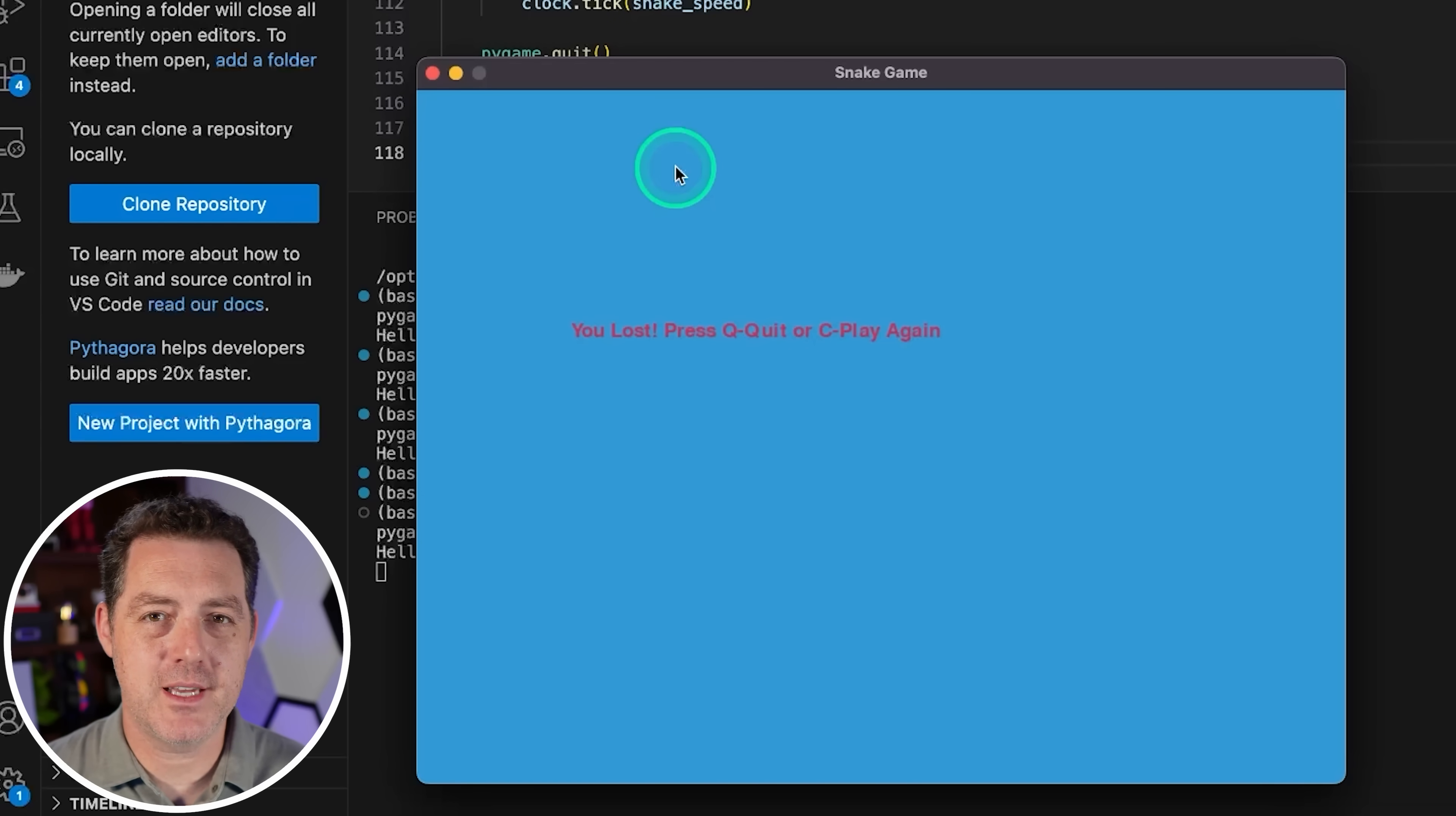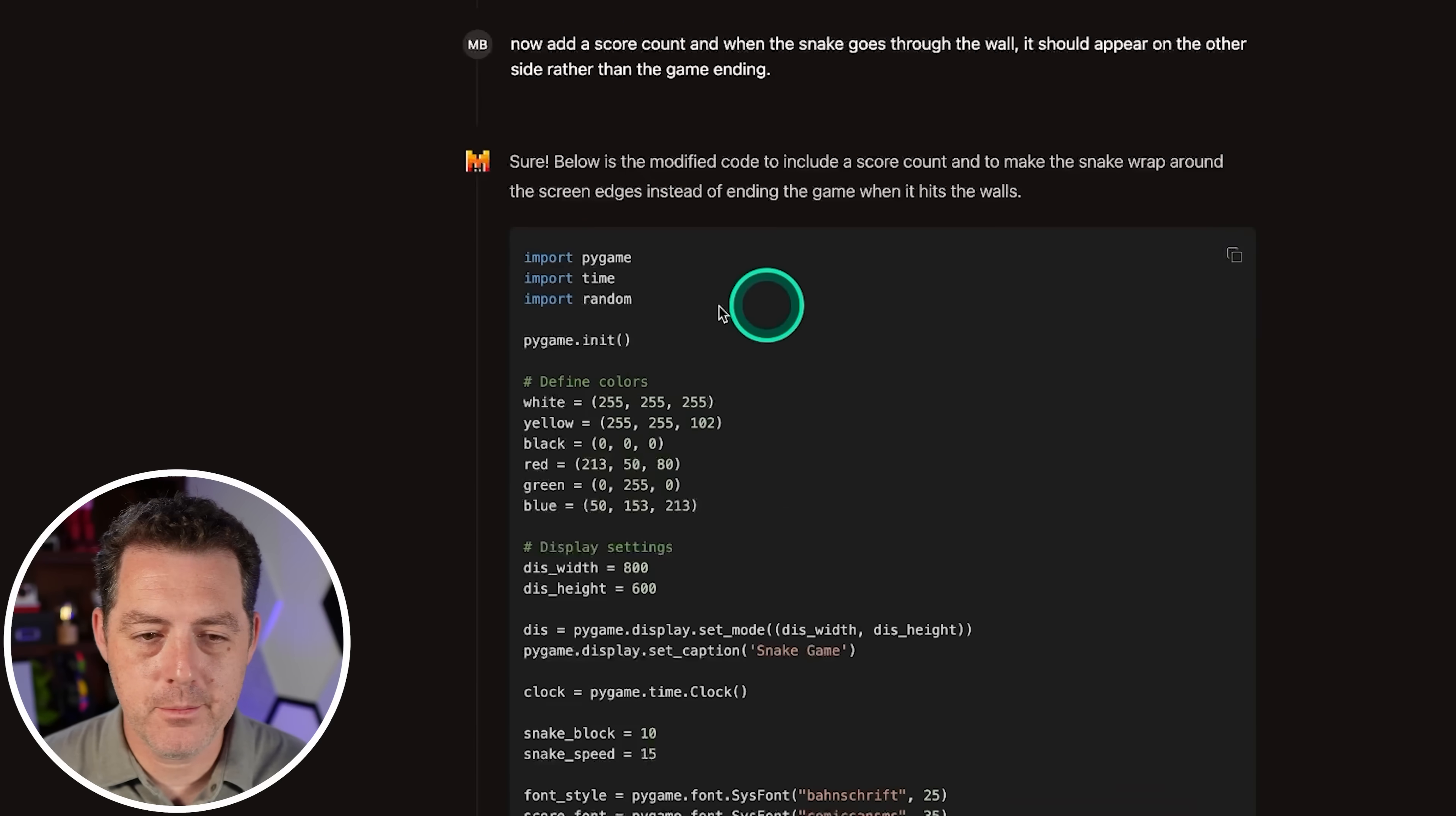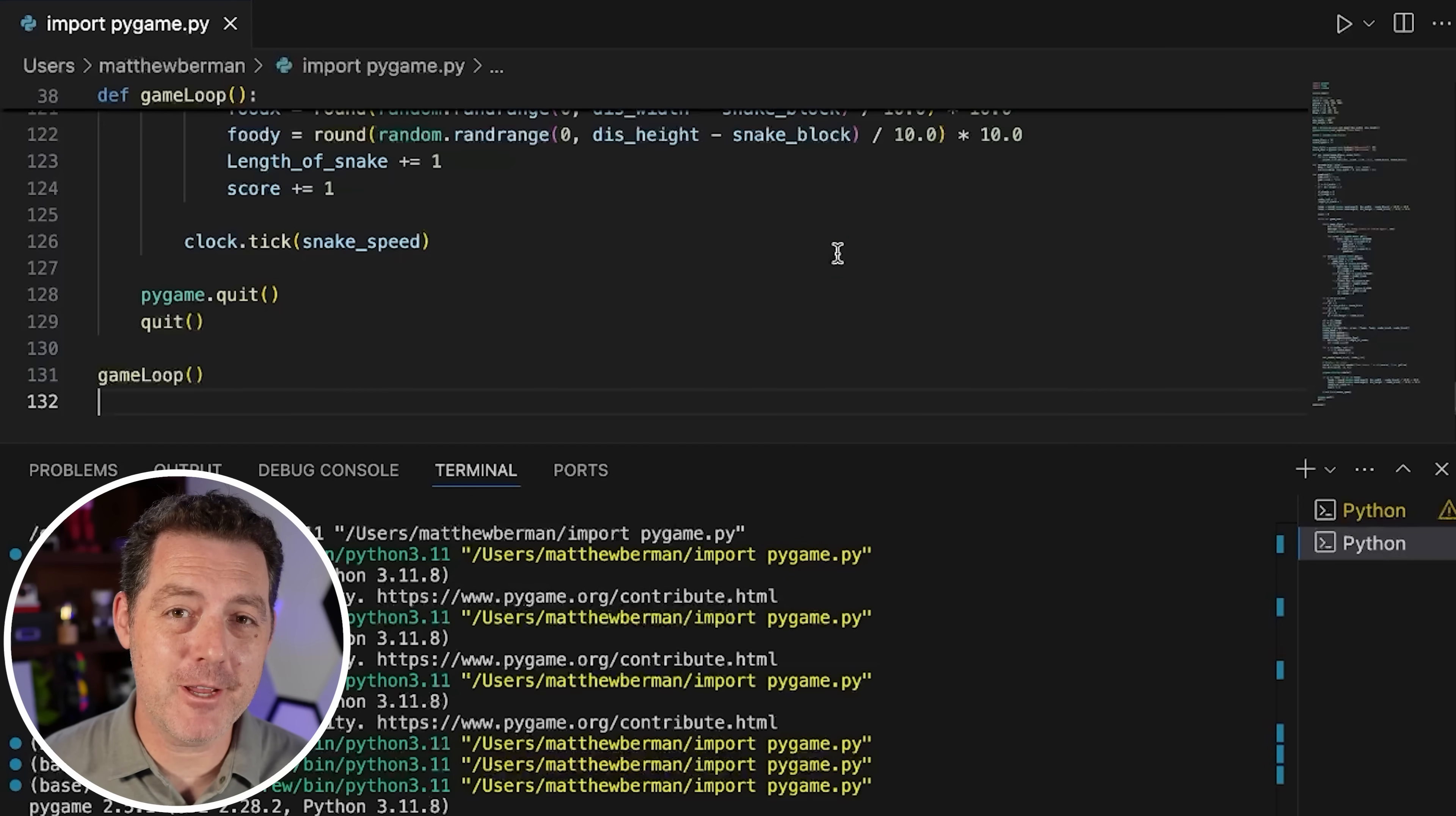Now let's add a couple of features and see how it does. Add a score count, and when the snake goes through the wall, it should appear on the other side rather than the game ending. So now it's outputting the modified code and I'm going to skip ahead until this is done. There we go. New version. Copy the code. Switch back to VS Code. Let's replace the old code with the new code. Hit save again. Don't see any immediate errors, but let's see what happens. All right. So we have a score and the score increases. Excellent. And let's see what happens when we go through the wall. Yup. It works perfectly. Look at that. Very nice. Mistral large two seems to be a very good coder.